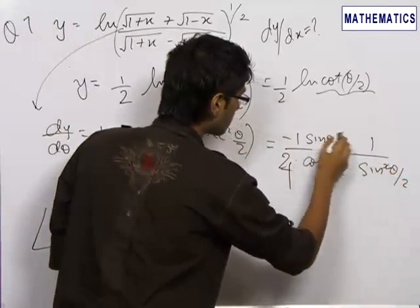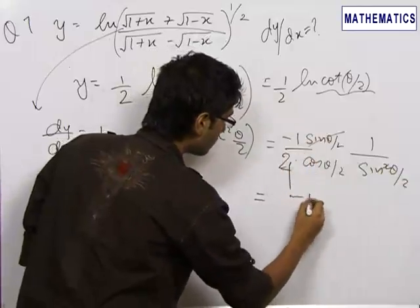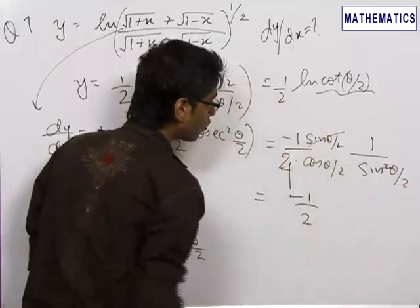So this becomes minus 1/(2 times 2 sin(θ/2) cos(θ/2)), which is equal to sin θ.